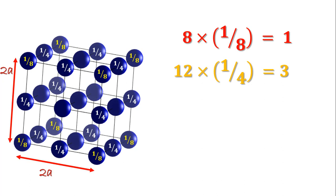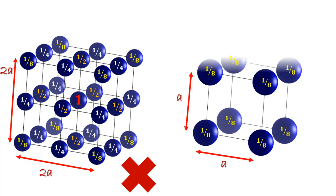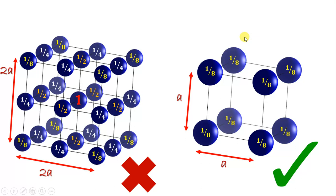Atoms at the center of each face contribute one half, and there are six such faces, giving 6 × (1/2) = 3. One atom is in the middle contributing solely to this cell. Therefore, the total number of atoms in this cell of side 2a is 8. We choose the cube of side length a because it contains the minimum number of atoms — just 1 — and we always try to find the primitive cell. Placing a second identical cell in the y direction would cause atoms to overlap, so we place only one atom per cell to avoid that problem.